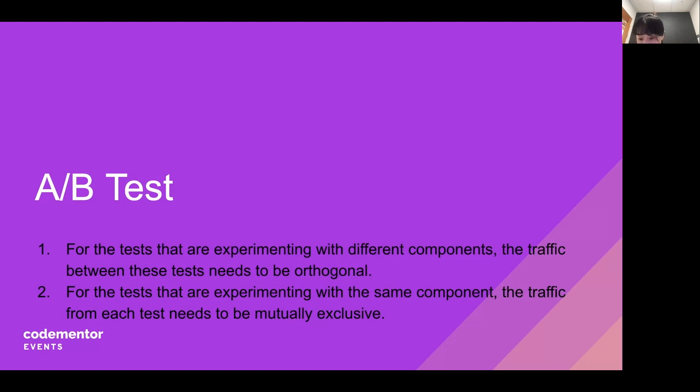In the real A/B test environments, every website or app might need to test several different types of things at the same time. For example, the front-end team might want to test different UI interfaces for the app. And the product team might want to test different formats of the ad. And the ranking team might want to test different ranking strategies. If we don't design the experiments carefully, these three different tests will interfere with each other. And as a result, we won't be able to read anything trustworthy from this test. To avoid this, the following rules need to be enforced when conducting A/B tests.